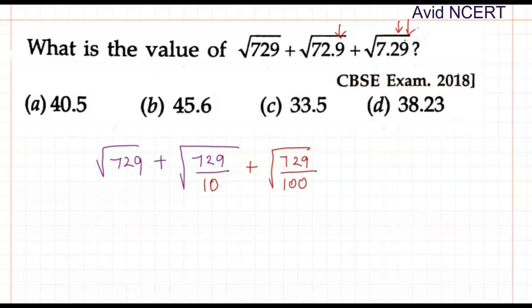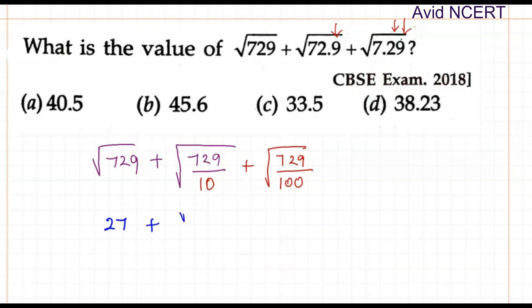Now that we know the square root of 729 is 27, write that as it is. So this can be written as square root of 729 divided by square root of 10 plus same thing goes here, square root of 729 divided by square root of 100. I am just explaining this for the beginners but those who know this can already skip the steps and directly find the answer.